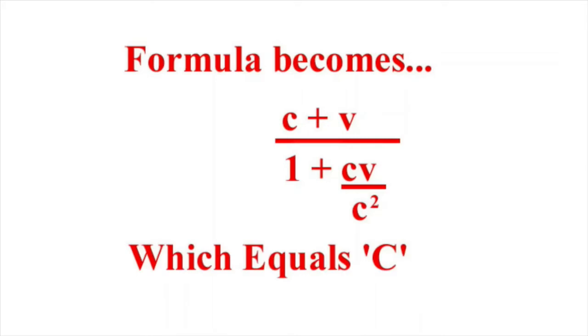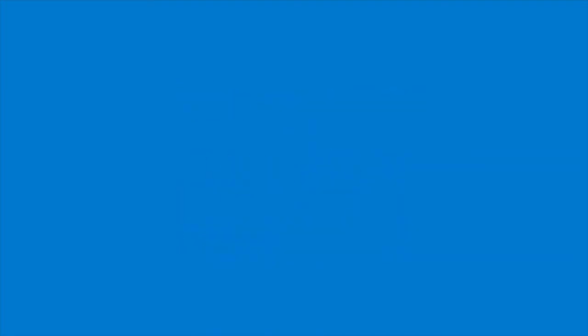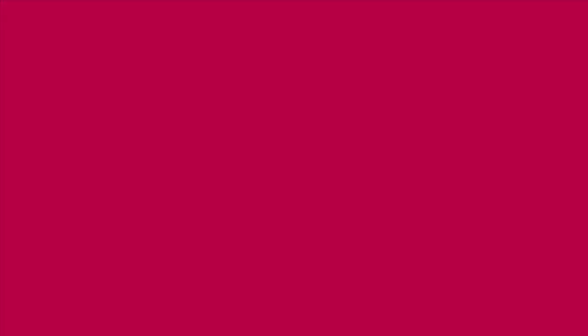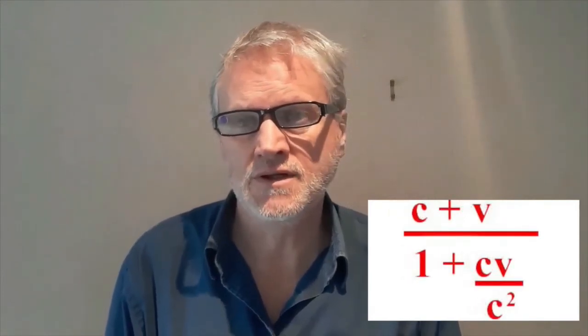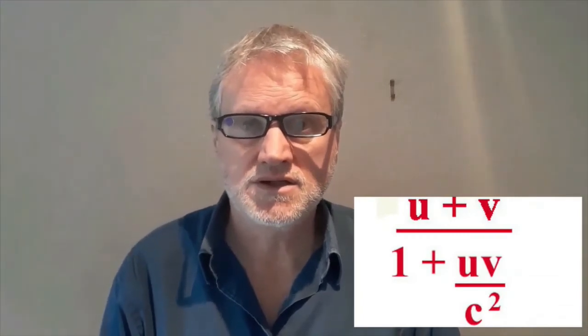So you cannot add the speed of light to the speed of the train. The new formula would seem to be decisive — it shows that you cannot add the speed of light to the speed of anything else, and it seems to vindicate both Maxwell and Michelson-Morley. But I think there's a problem here, because if you notice, it already contains C — it seems to beg the question. We seem to be assuming that the speed of light is constant in order to derive the formula which shows that it's constant, and that's not allowed. So we'll need to find a different approach.